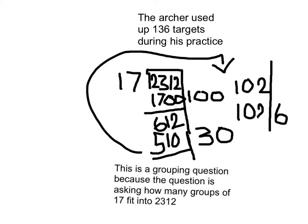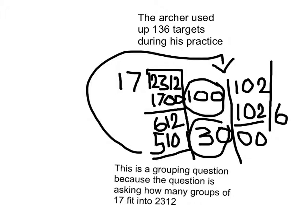So 17 times 6 is 102. And then that equals 0. So then I add these three numbers up. And I get 136.